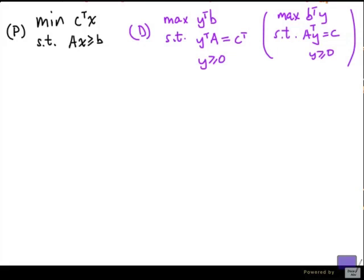In some books, you will see the dual written like this. Now remember the duality theorem for this pair of problems. If P has an optimal solution, then so does D, and the optimal values for the two problems are the same.